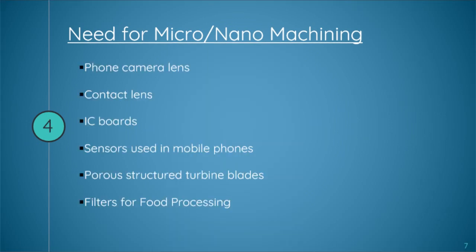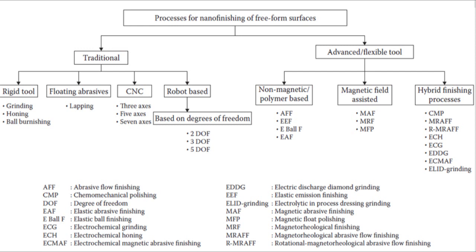Some other important applications where nano or micro finishing operations are required include phone camera lenses, contact lenses, PCB boards, sensors used in mobile phones, porous structures, turbine blades, and filters for food processing. These requirements demand nano or micro finishing processes.